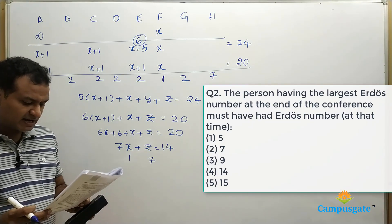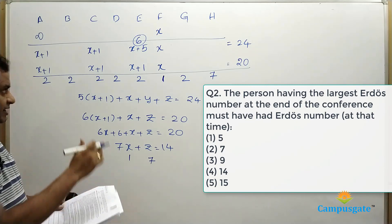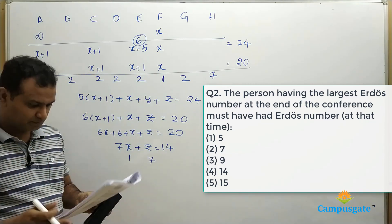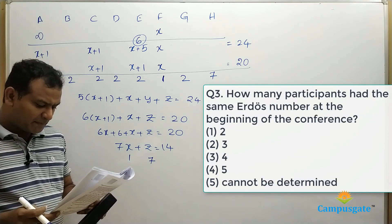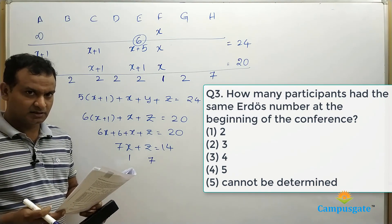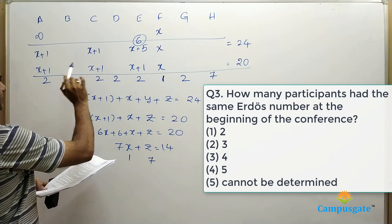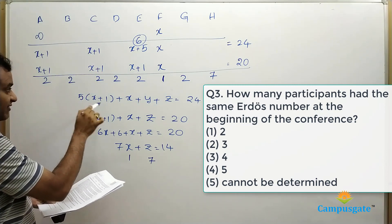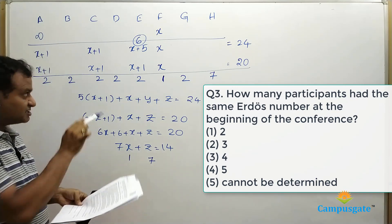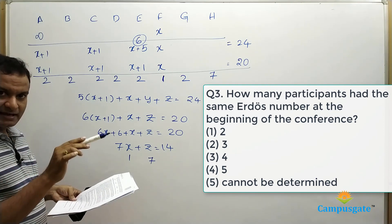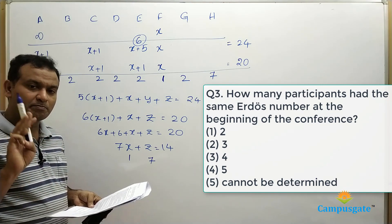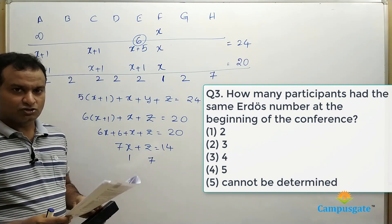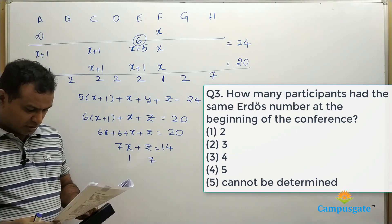The person having the largest Erdős number at the end of the conference must have had Erdős number 7. We don't know who has this — it might be G, H, D, or B. Now, how many participants had the same Erdős number at the beginning of the conference? Initially, A and C might have had different numbers; only 3 people had the same Erdős number at the start. After the third day, 5 people had the same because A and C changed to X plus 1. So the answer is 3 — answer option 2.